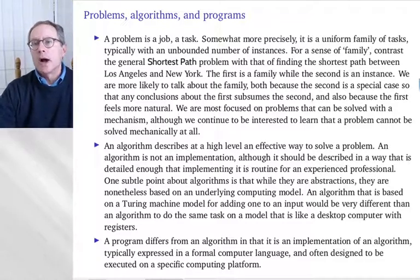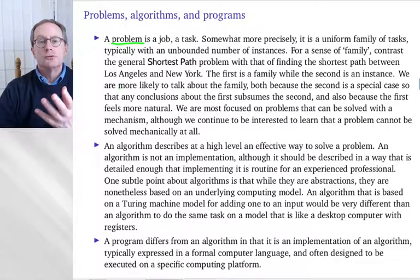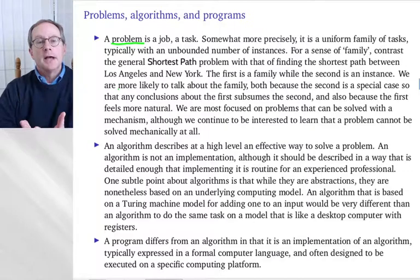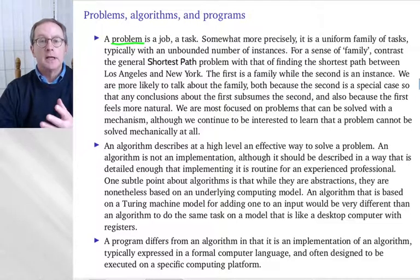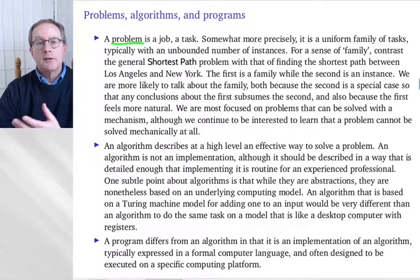So a problem here is a job, it's a task. Maybe a little more precisely, it's a uniform family of tasks. So the best example here is the shortest path problem is, in general, you're given a network with weighted edges and you want to find the shortest path from one place to another. A specific instance of the shortest path problem is you're given New York and Los Angeles and asked to find the shortest path from New York to Los Angeles. So the problem is a uniform family of tasks and the instance is this one.